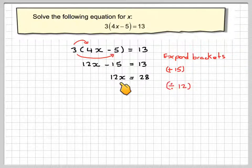Next, we're going to have to divide by 12. So we're going to have x equals 28 over 12. Now this could be simplified, because 4 goes into 28 seven times and into 12 three times. We've got 7 over 3.